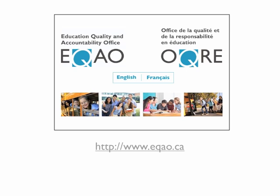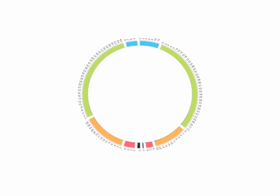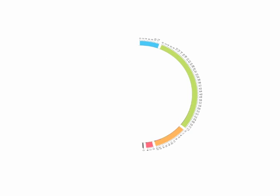The following visualization uses cohort data for one group of students on the reading assessment. In this context, the circle represents the entire cohort of students who wrote the Grade 3 reading assessment in the 2007-2008 school year and then wrote the Grade 6 reading assessment in the 2010-2011 school year. These two assessments divide the circle in half, with the Grade 3 assessment on the left side and the Grade 6 assessment on the right side.